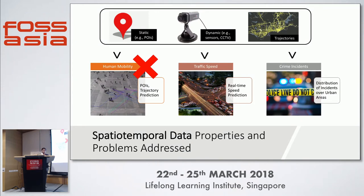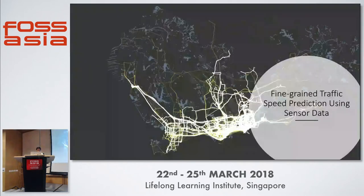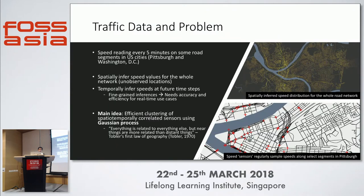In this talk, we'll focus on two problems: traffic speed prediction and crime incident prediction, due to their relatedness and also being somewhat simpler than trajectory prediction. The first problem is how to predict fine-grained traffic speed over a big complex road network in the most extensive spatial way, and how to predict five to ten minutes ahead of time to route a fleet of autonomous vehicles.